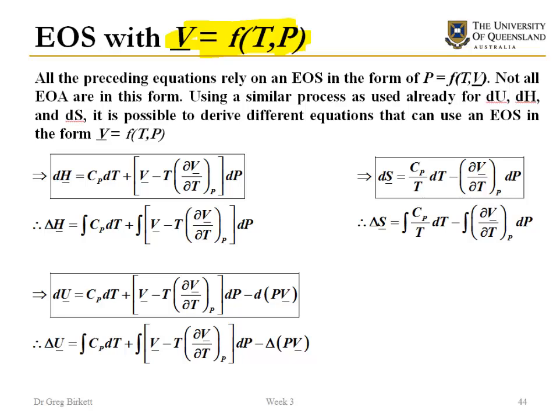And when we do that, then what we end up with is similar equations to what we had before, but we're sort of replacing the P's with the V's. We're not directly replacing them, these equations are actually quite different. But if you've got an equation of state that is V is equal to something, something, something, then these are the equations to use. That's the only thing that dictates the choice between what we looked at before and what we're looking at here on this slide.